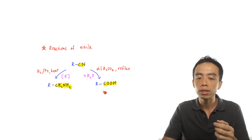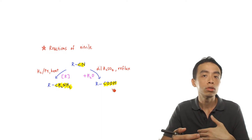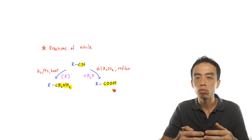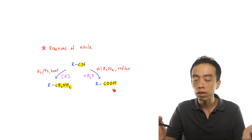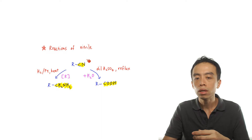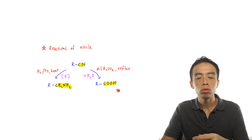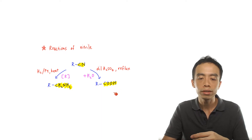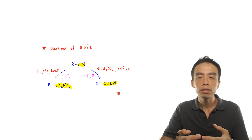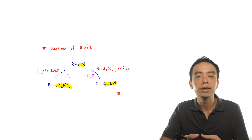I can even reduce this carboxylic acid to a primary alcohol. Once I can convert this to a primary alcohol, then I can convert this alcohol to a lot of other functional groups in organic chemistry. So this pathway — involving the hydrolysis of nitrile to form carboxylic acids — is a lot more useful in organic synthesis, and therefore it is more popular and more common in questions.